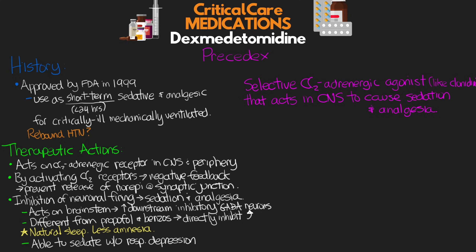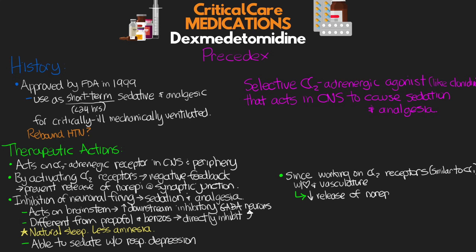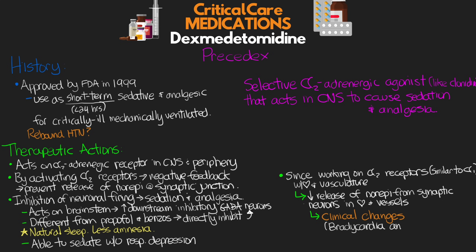Anecdotally, I've found Presidex or dexmedetomidine to be sometimes effective and sometimes not, so it's really going to depend on a patient-by-patient basis. Since dexmedetomidine works on the alpha-2 adrenergic receptors, which have a similar effect profile to our typical alpha-1 adrenergic receptors — specifically regarding the heart and vasculature — it can result in decreased release of norepinephrine from synaptic neurons that innervate the heart and blood vessels, leading to clinical changes like bradycardia and hypotension, among other things.